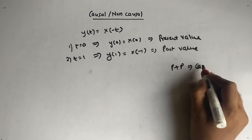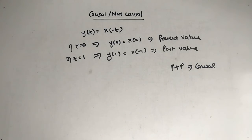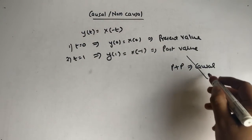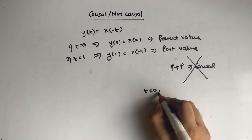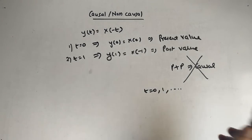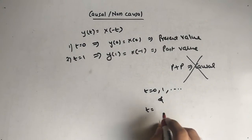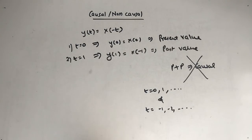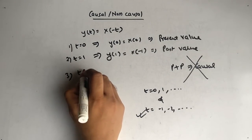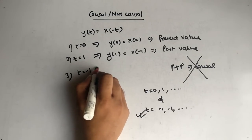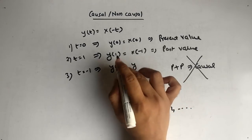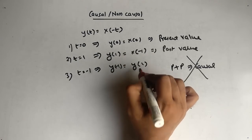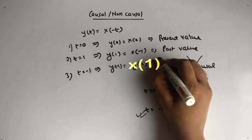If you think the answer is causal, you are wrong. In this example, we must check t equal to 0, t equal to 1, and also negative values like t equal to minus 1, minus 2, and so on. At t equal to minus 1: y(−1) = x(1), which is a future value.